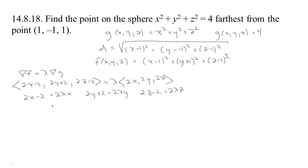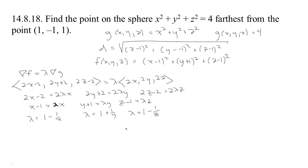I can divide through by 2 in each equation, giving: x - 1 = λx, y + 1 = λy, and z - 1 = λz. Solving each for λ: λ = 1 - 1/x from the first, λ = 1 + 1/y from the second, and λ = 1 - 1/z from the third. Note that x, y, z cannot be zero — if x were 0, we'd get -2 = 0; if y were 0, we'd get 2 = 0; and if z were 0, we'd get -2 = 0, all impossible.